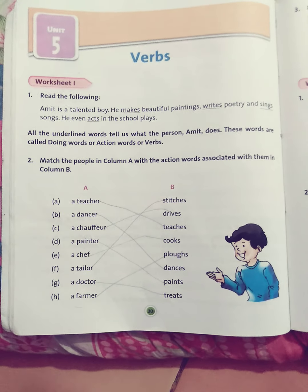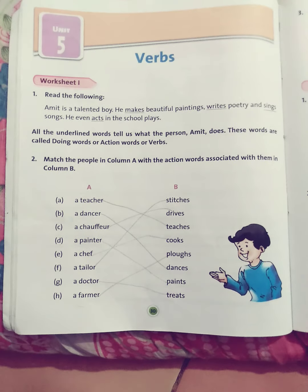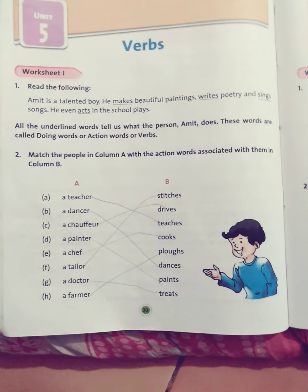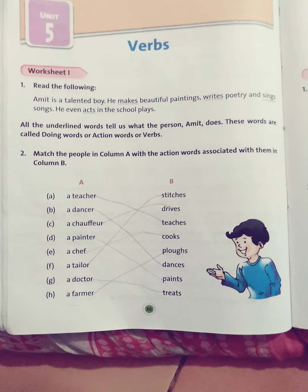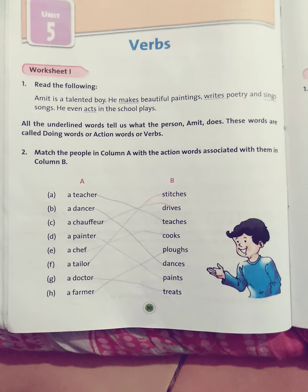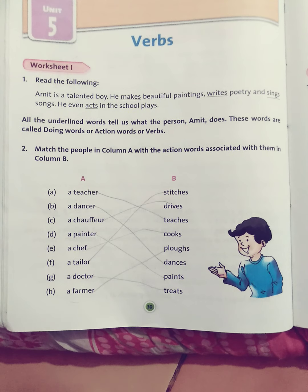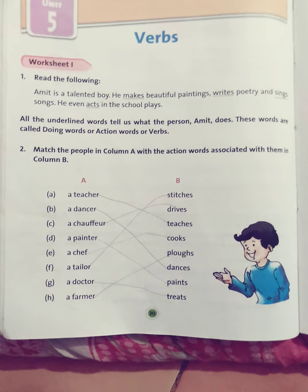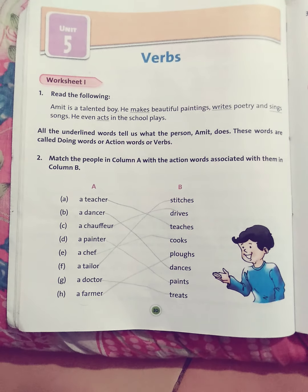The next question is: match the following in column A with action words associated with them. I have already done it for you. A teacher teaches, a dancer dances, a chauffeur drives, a painter paints, a chef cooks, a tailor stitches, a doctor treats, a farmer plows. So we have done worksheet number one.